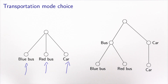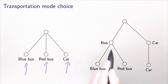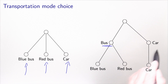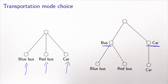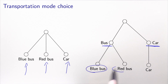So maybe one way to deal with this is to say there are basically two levels. There is a decision to take the bus or the car — this is one level. And another level, which is: do we prefer the blue bus or the red bus, if we take the bus?